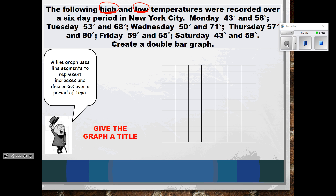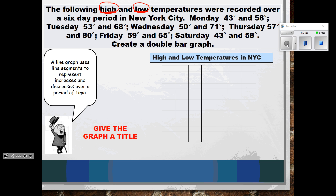The first thing we want to do is give our graph an appropriate title — one that is representative of what the information is going to be, so someone looking at our graph would know exactly what the information is representing. Since this is the high and low temperatures in New York City over a period of time, I labeled mine 'High and Low Temperatures in New York City.'